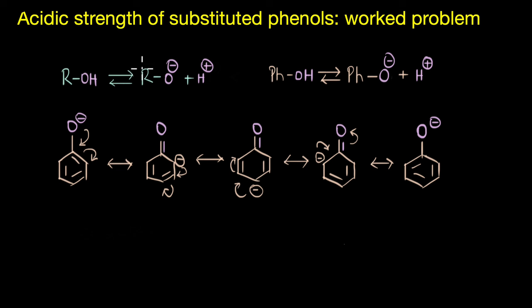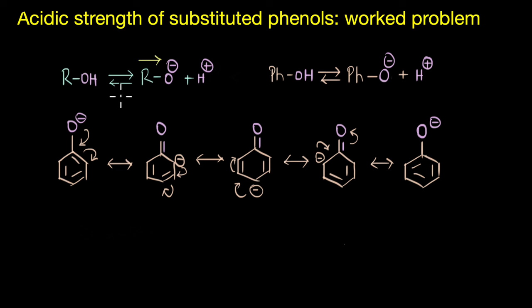In fact, the electron donating alkyl group adds more electron density onto the oxygen atom, and this decreases the polarity of the C-O bond. As a result, ionization is not favored in the case of alcohols.